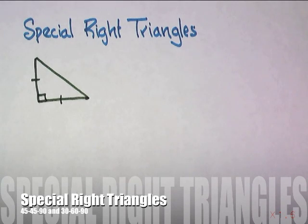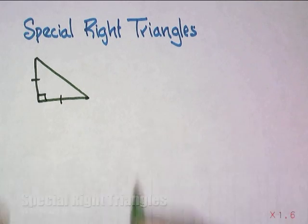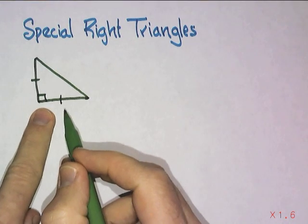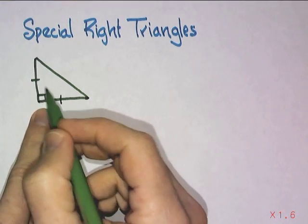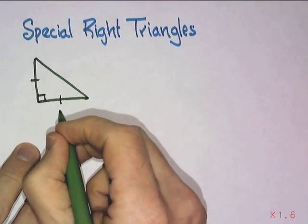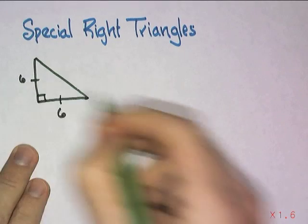Today's lesson is on special right triangles. As you can see, I have already sketched out a right triangle, and this happens to be an isosceles right triangle. So that's what we mean by special right triangles. Let's say we're going to say that these sides are 6.